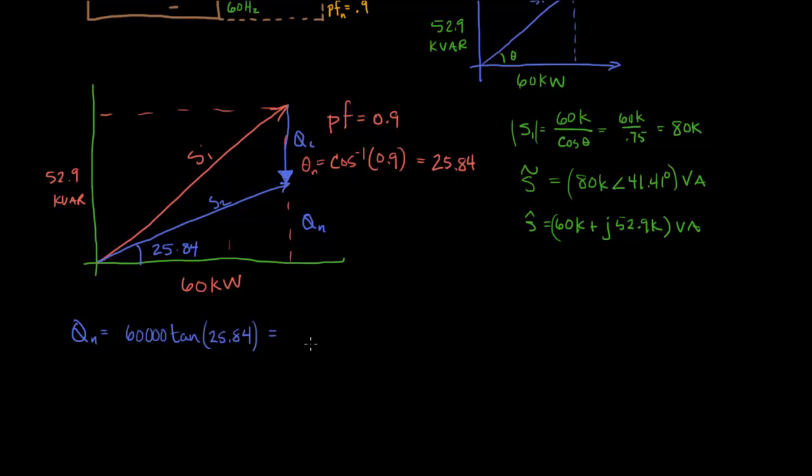Plug that into your calculator and you will get 29056. That's Q nu, and that value is positive, because this is what we're going to be left with, is this triangle.